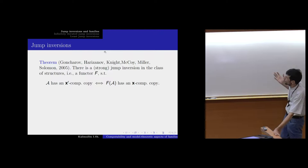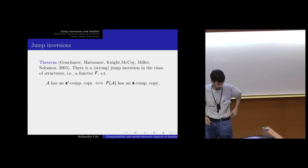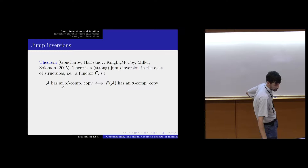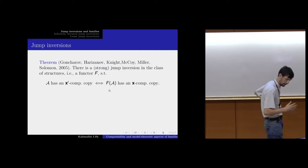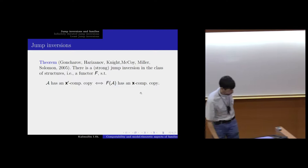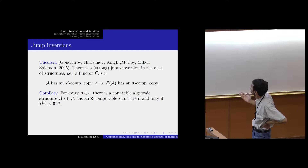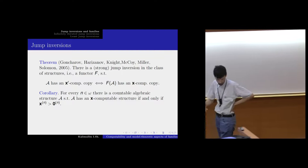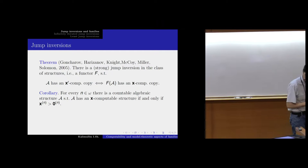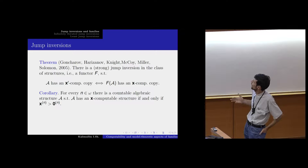There are a lot of Jump Inversions. In my talk, I will understand any functor which maps x-prime computable structures to computable structures if and only if. For more precision, let us look at how it works for structures of Sleiman and Werner. These two theorems give us an example of structures which are computable if and only if — computable in oracle if and only if the oracle is non-n-low, not low-n.